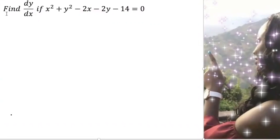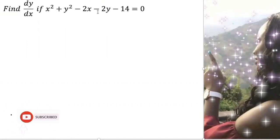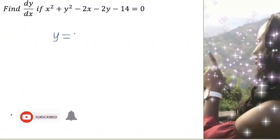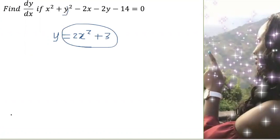Implicit differentiation is where we differentiate each side of an equation with two variables. We can have one side or both sides having the variables. We treat one of the variables as a function of the other. Because we're differentiating y with respect to x, y is a function of x. For example, y equals 2x squared plus 3 is a function of x, so y represents some function that we are differentiating.